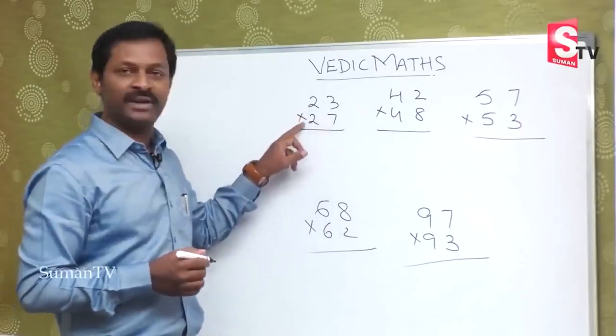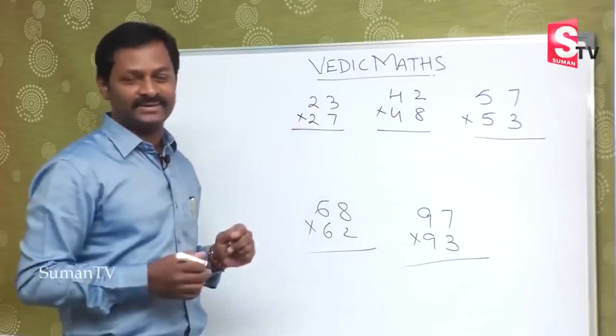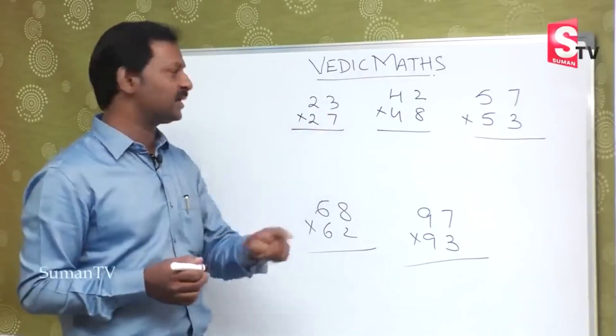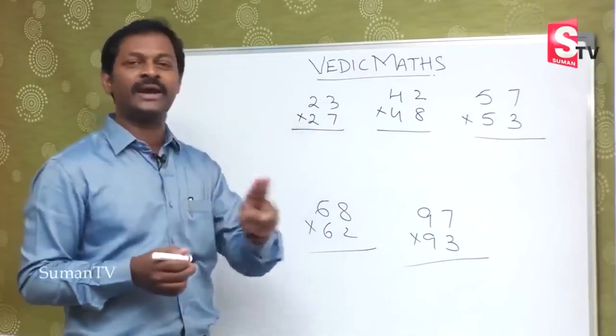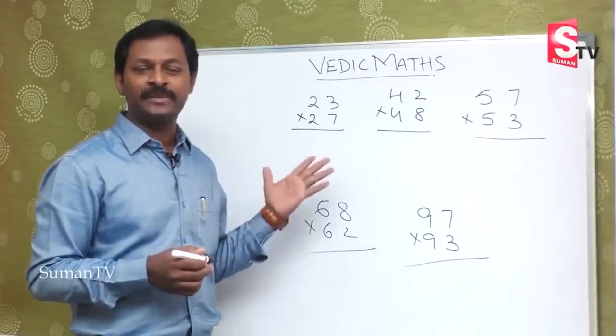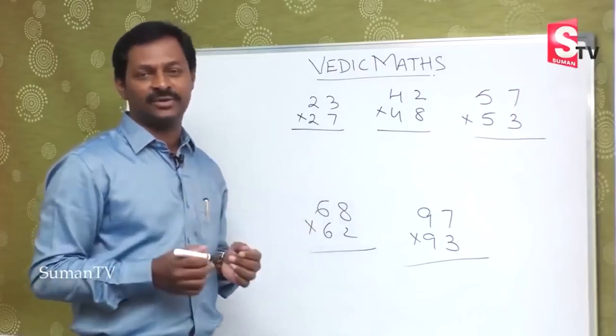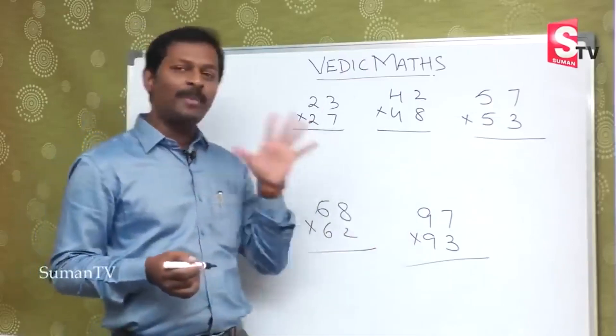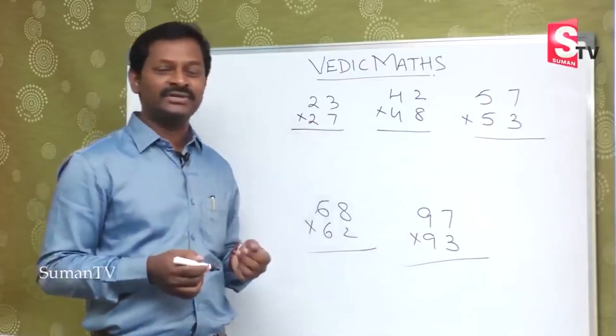There is a three-step methodology: multiplication with 7, multiplication with 2, and addition. Three parts. But in Vedic method, we have a direct method. If you look at these sums, there is a common pattern. What is it? The tens place is the same.